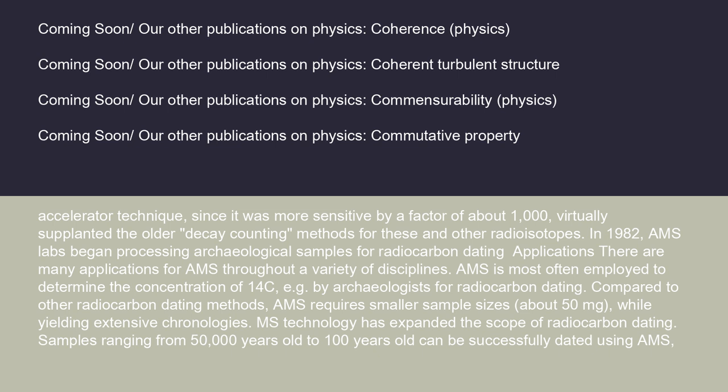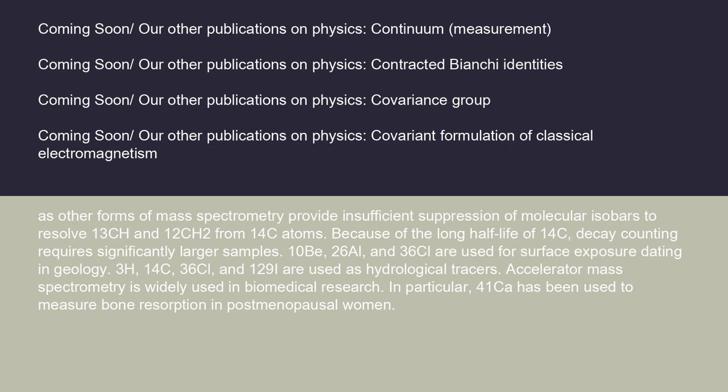In 1982, AMS labs began processing archaeological samples for radiocarbon dating applications. AMS is most often employed to determine the concentration of 14C, e.g. by archaeologists for radiocarbon dating. Compared to other radiocarbon dating methods, AMS requires smaller sample sizes — about 50 mg — while yielding extensive chronologies. Samples ranging from 50,000 years old to 100 years old can be successfully dated using AMS, as other forms of mass spectrometry provide insufficient suppression of molecular isobars to resolve 13C and 12CH and 12CH₂ from 14C atoms.